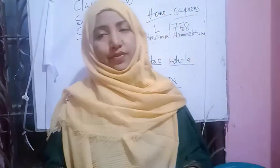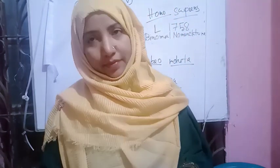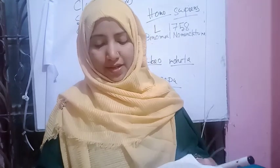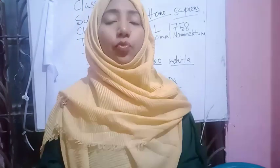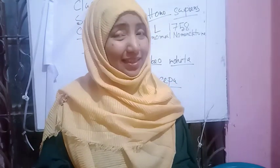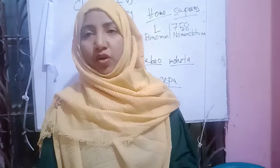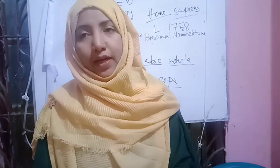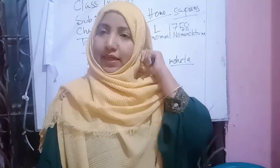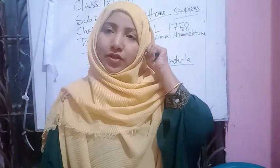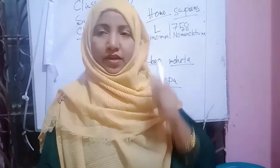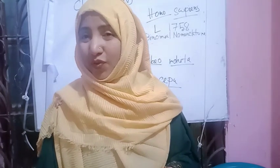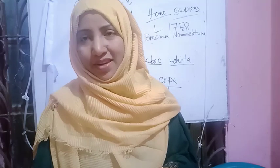My dear students, I have explained the system of binomial nomenclature, including eight rules of binomial nomenclature. Now I will give you 15 species names and their scientific names.